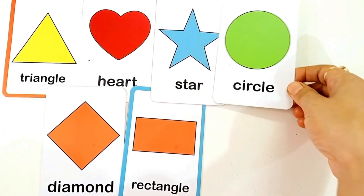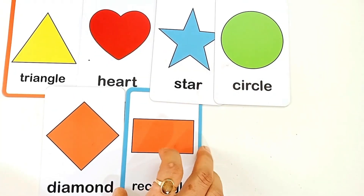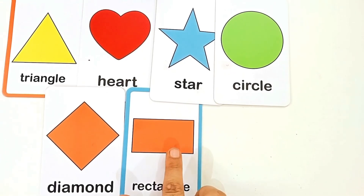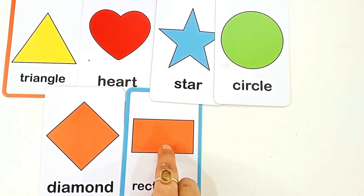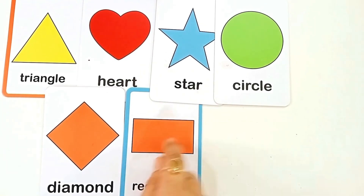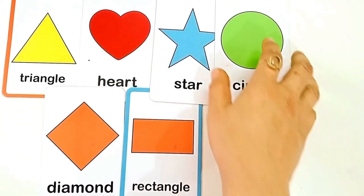R for rectangle. R-E-C-T-A-N-G-L-E rectangle. This is rectangle shape. And the color is orange color.